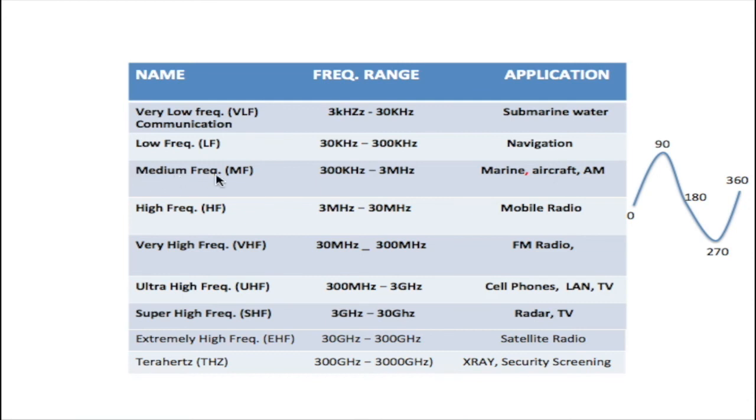The medium frequency between 300 kilohertz and 3 megahertz is used for marine aircraft and also AM radio. The high frequency, abbreviated HF, between 3 megahertz and 30 megahertz is used for mobile radio.